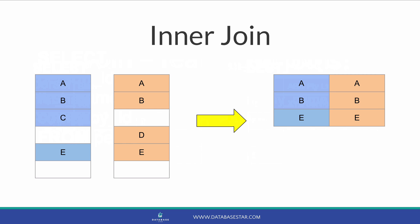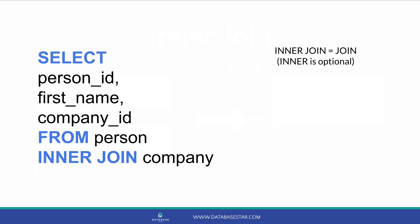How do we use this type of join? An inner join is written by specifying the word join, or the words inner join, between the first table and the second table. In our query, we specify person inner join company. The inner word is optional, but I prefer to include it so it's clear what type of join it is. If you prefer to leave it out, you can just write join and you'll get the same results.